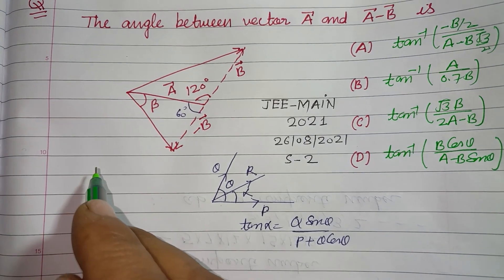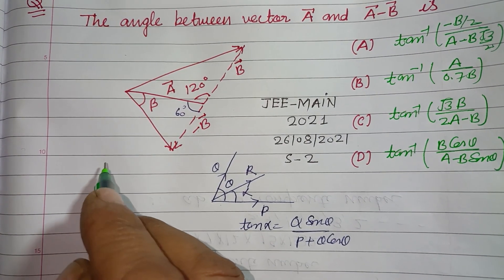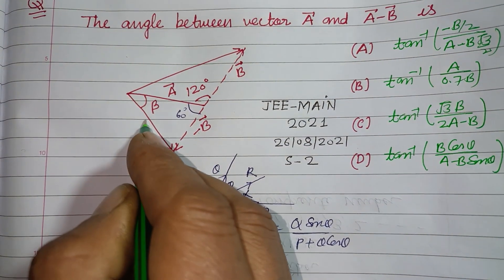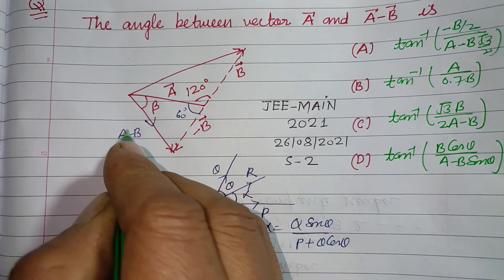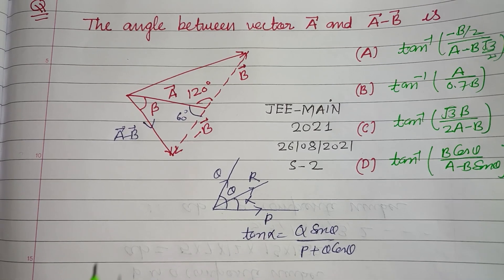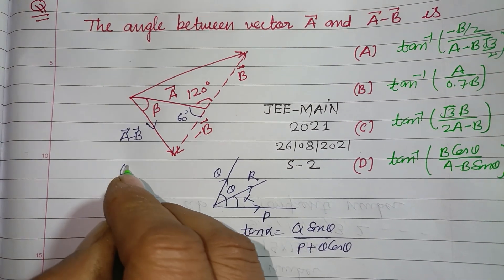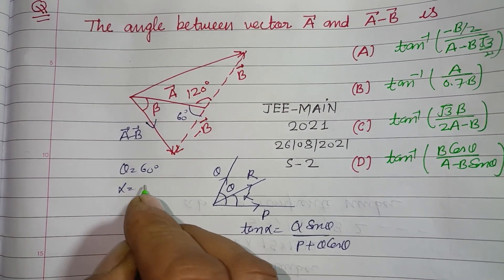So in this figure, it is given that the angle between resultant of A minus B, this is A and A and minus B is A minus B.